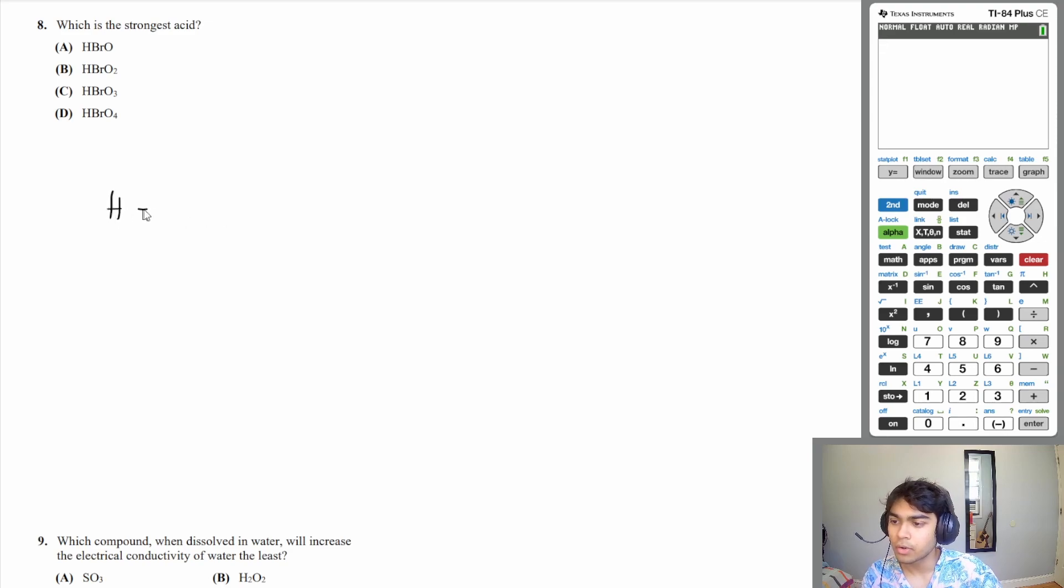So H-B-R-O is going to look like this. Although the H is directly next to the bromine, in an oxyacid, the H is always going to be on an oxygen. So B is going to look like this.